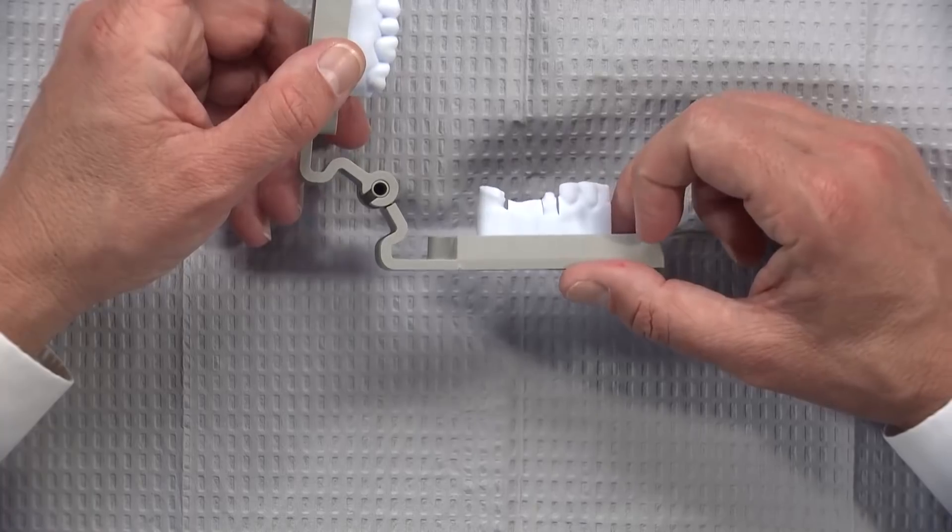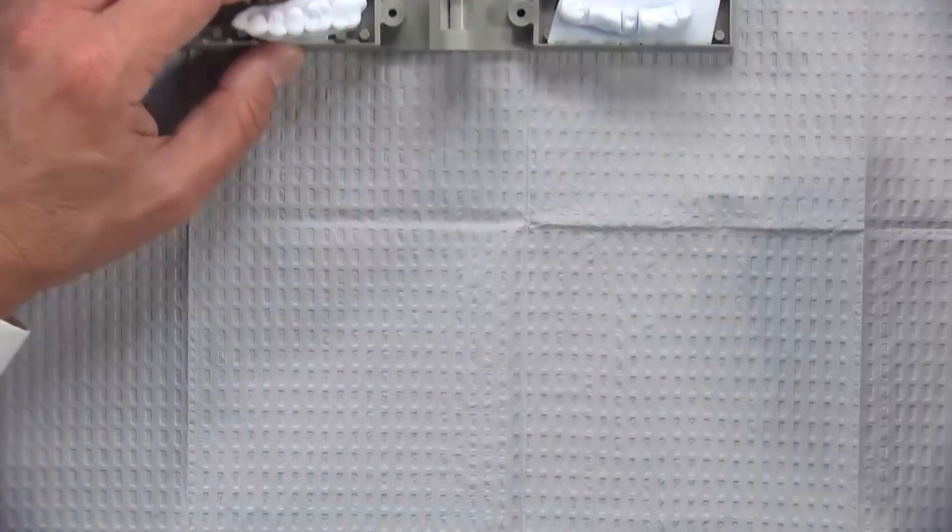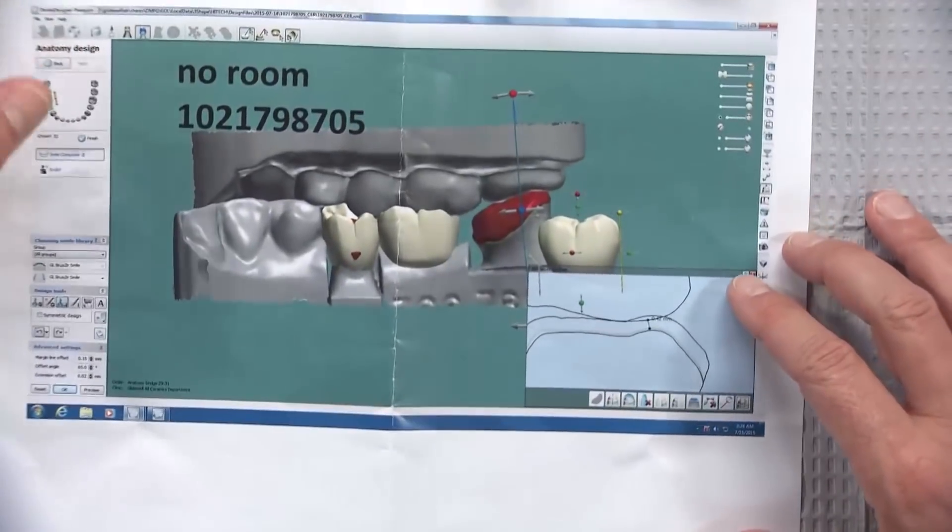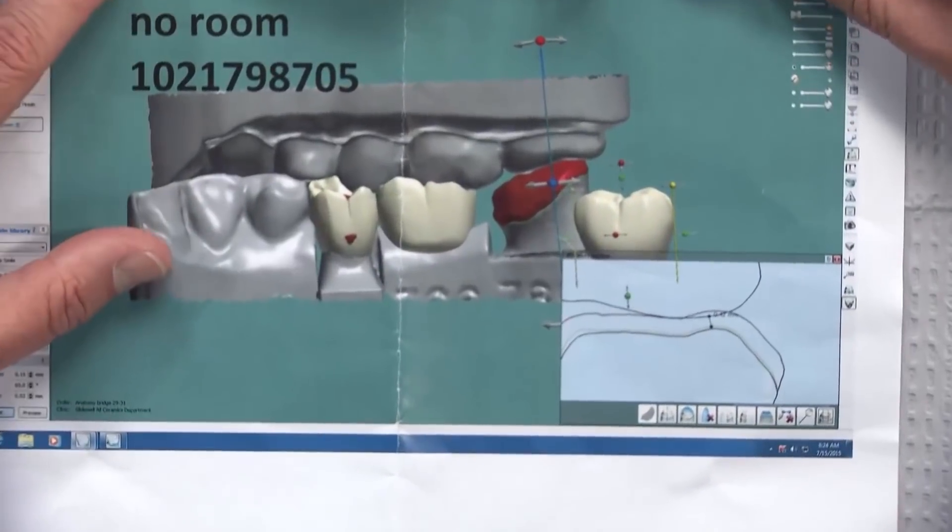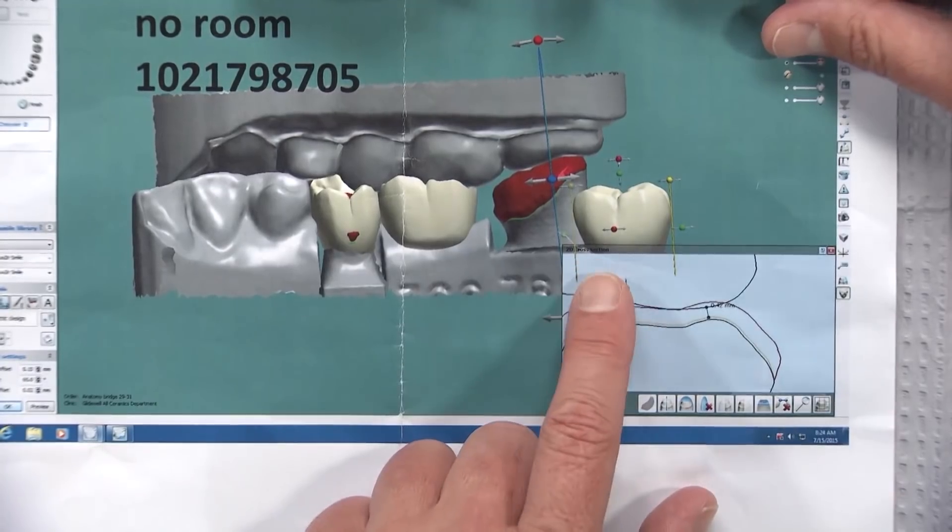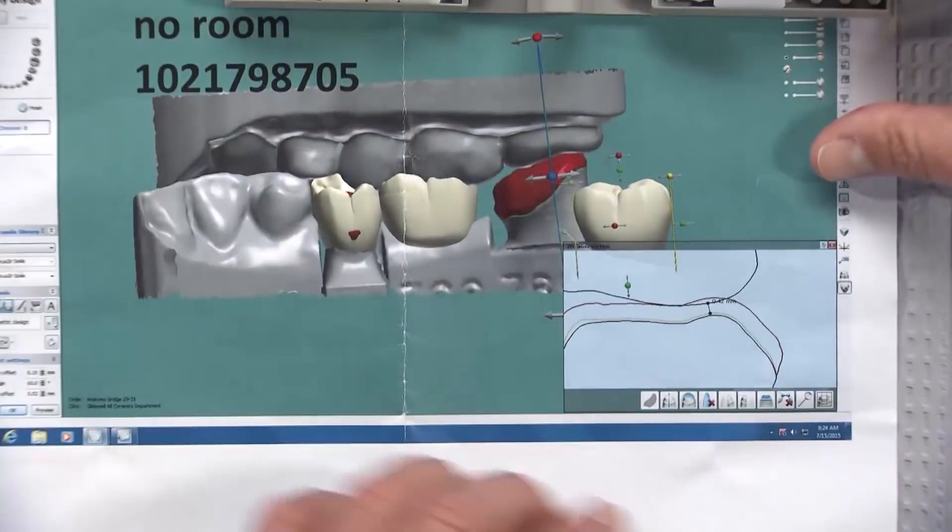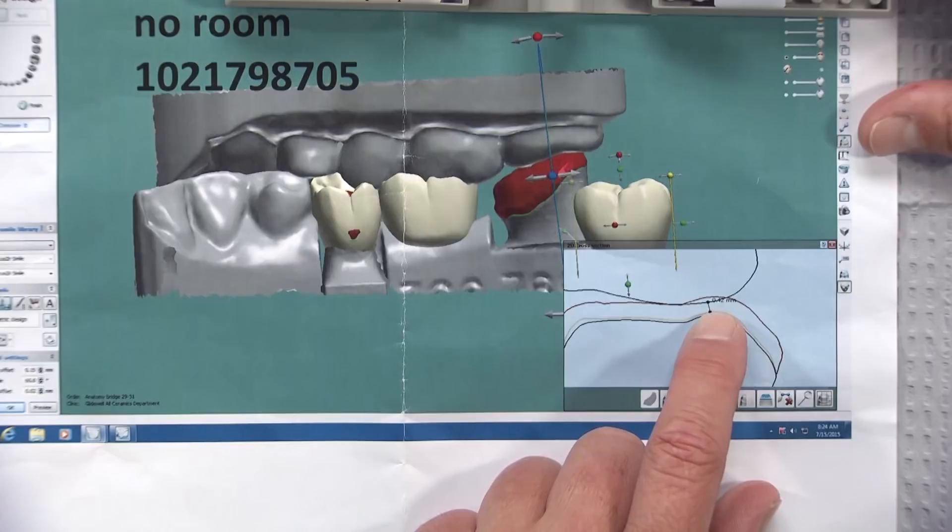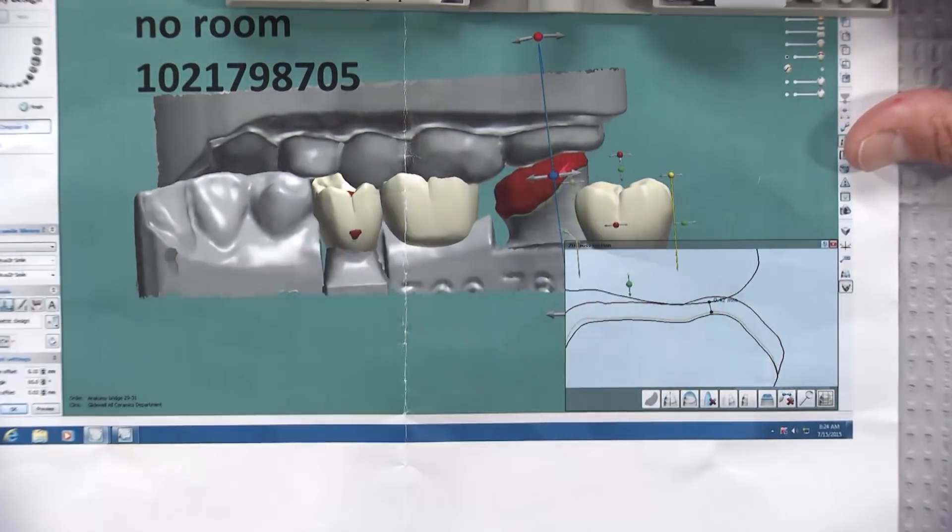The interesting thing here though is that when we took the doctor's digital impression which we received in addition to the physical bridge that came in, we realized that there was not enough room here for this bridge, specifically on the most distal abutment. On this tooth right here when we measured it, we get 0.42 millimeters.